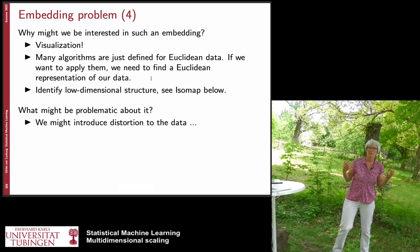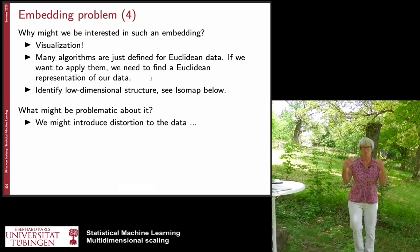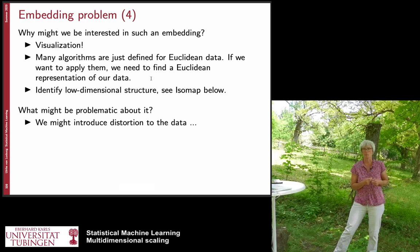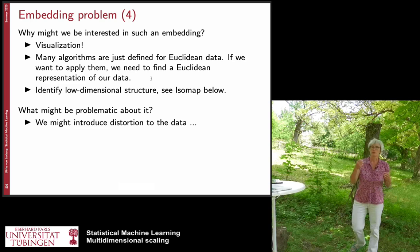The second reason is that you may have a data analysis algorithm that only works for Euclidean data. Say you want to do principal component analysis — standard PCA requires a Euclidean representation. If you start with a set of molecules and want to do PCA, you need to find a Euclidean representation, and embedding might be one way to achieve that. There might be other ways, and sometimes you don't need it explicitly because you use a kernel mechanism, but in other circumstances you really need this Euclidean representation.